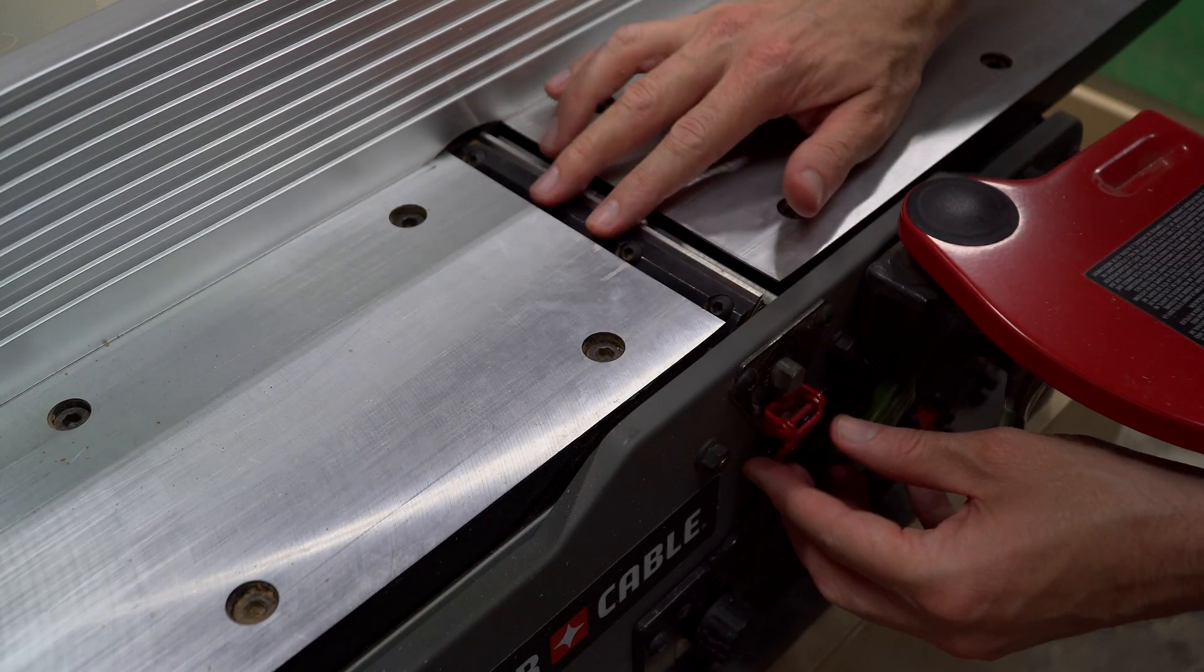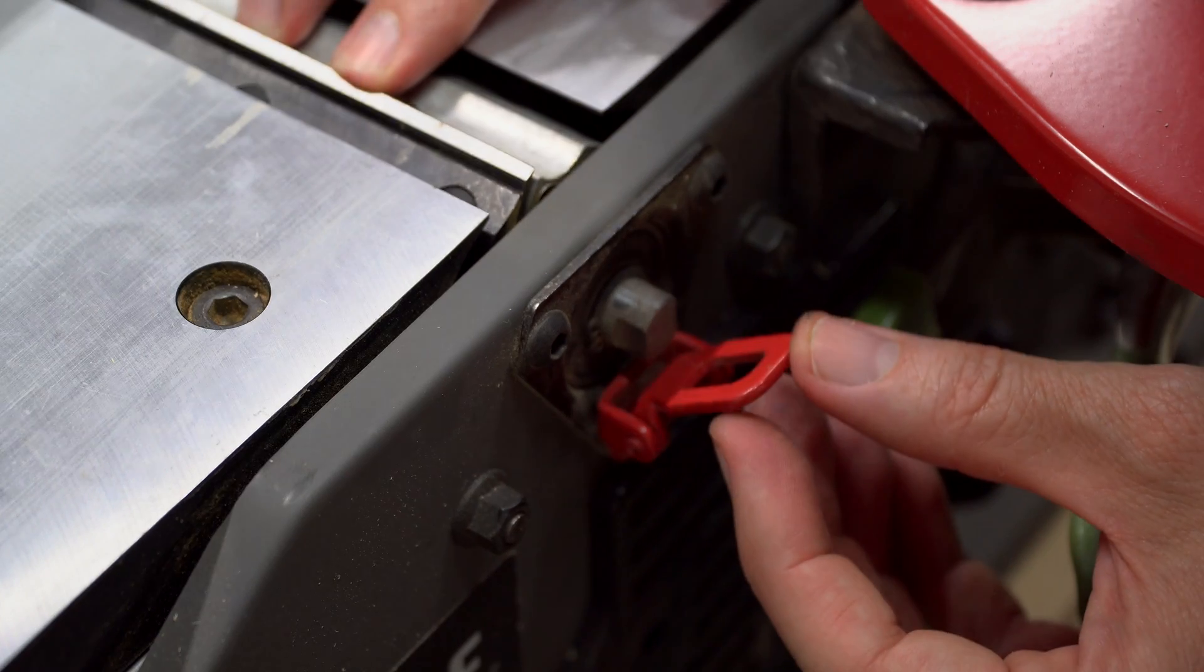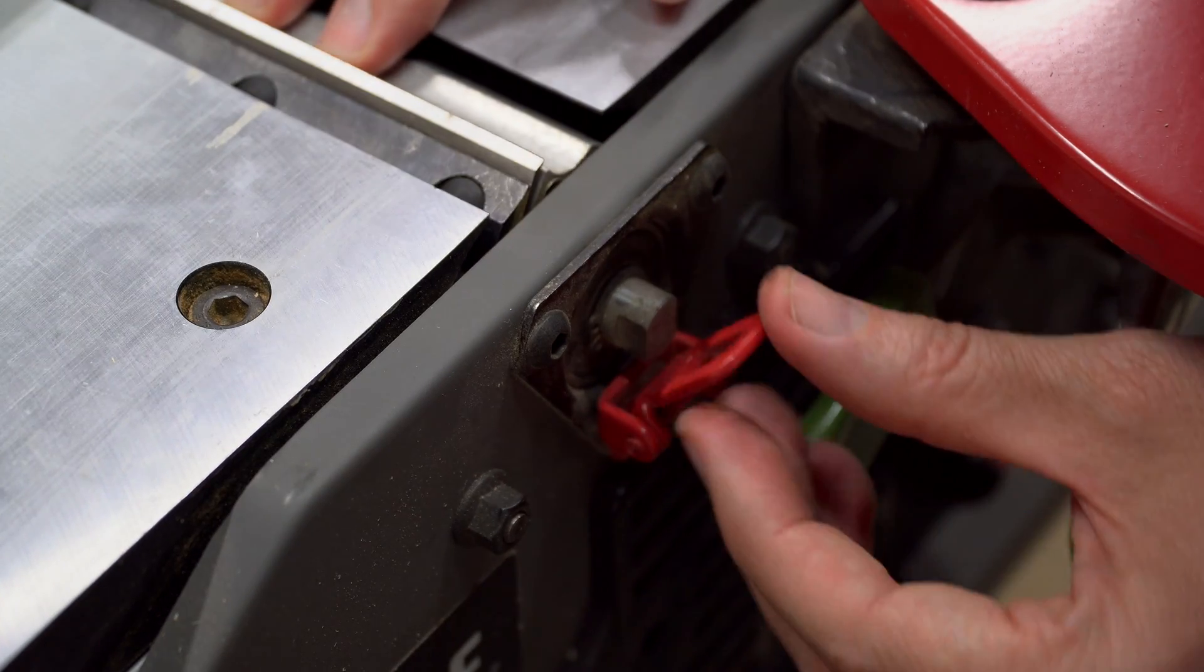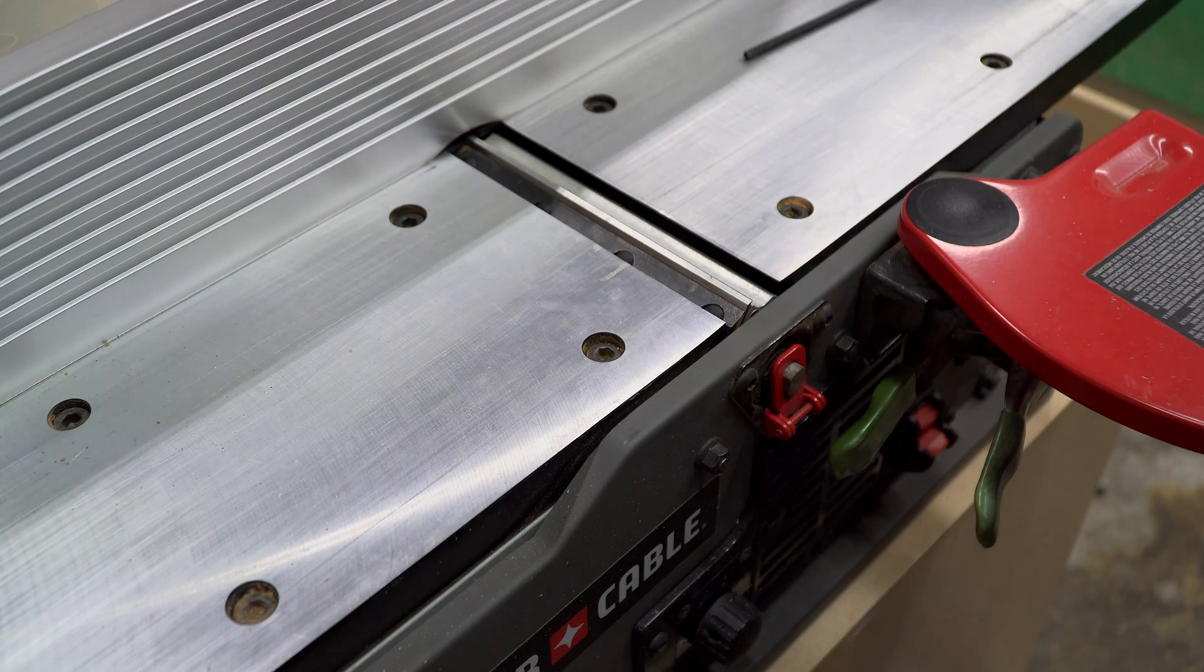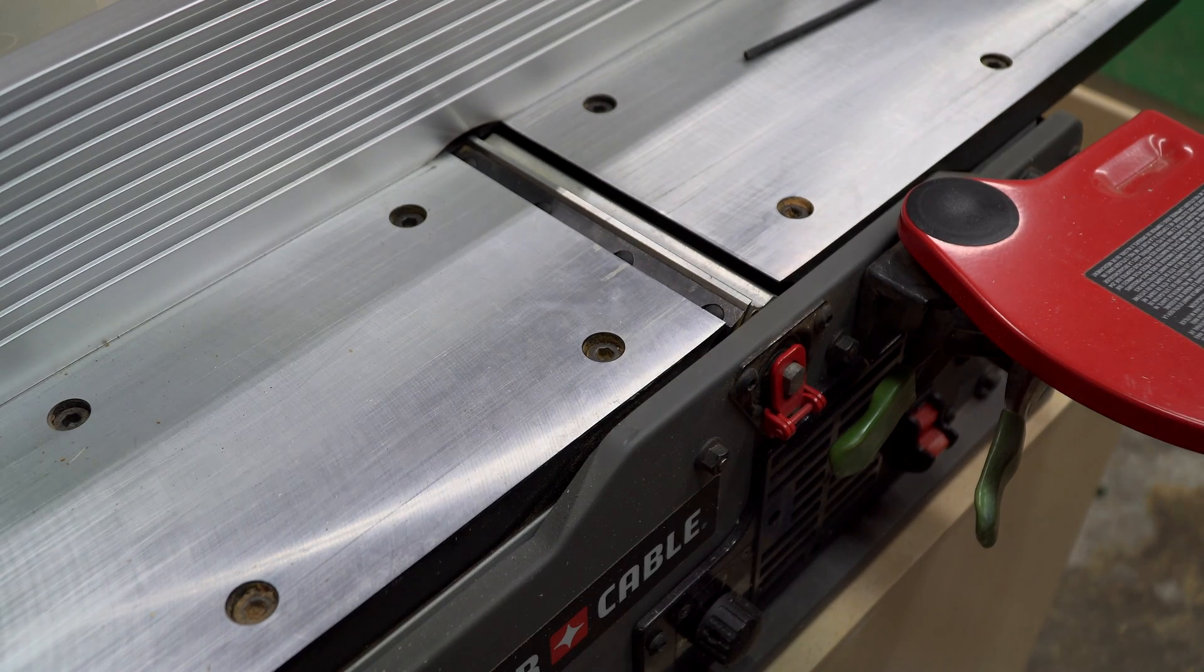Engaging the cutter headlock will hold the blade in the correct position for setting its height. If your jointer doesn't have a cutter headlock, or height adjusting set screws, you'll need to use a method that's different from this one.